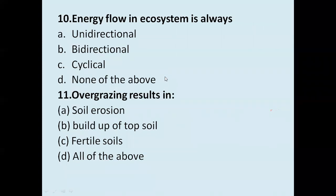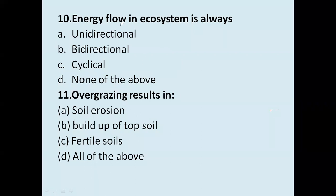Energy flow in an ecosystem is: unidirectional, bidirectional, or cyclical? Energy flow in the ecosystem is unidirectional. The correct answer is unidirectional.